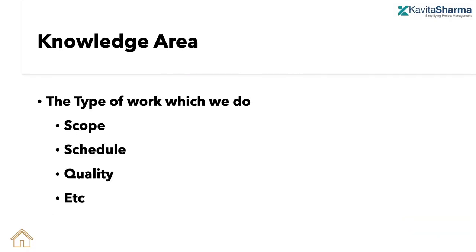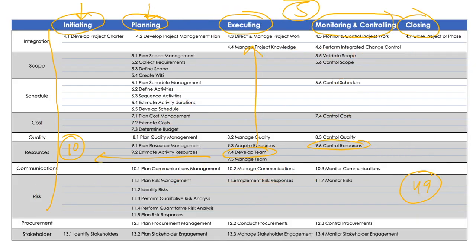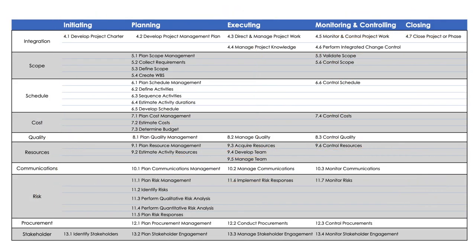Now let's talk about knowledge areas. Scope management is anything to do with scope — how do I collect requirements, what do I deliver, how do I deliver, and who signs off on the deliverables? Schedule is about when I deliver. Based on the scope, I create a schedule, identify activities, determine their sequence, consider constraints like 'you cannot do this before a certain date,' and finally develop the schedule.